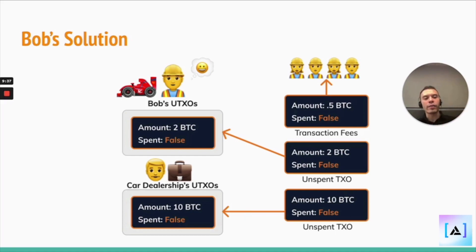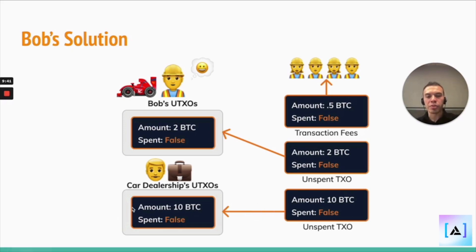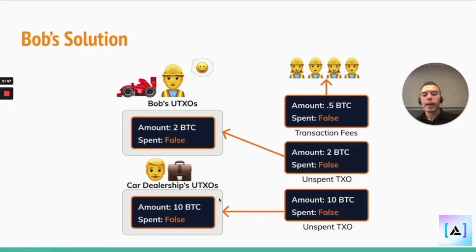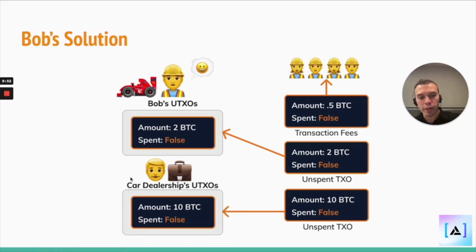What happens is Bob constructs a transaction in which he feeds his two UTXOs worth 6.25 Bitcoin. And out of that transaction there are a couple of outputs. One output goes to the car dealership with the spent flag marked as false, because that's a fresh output. So one output worth 10 Bitcoin goes to the car dealership.